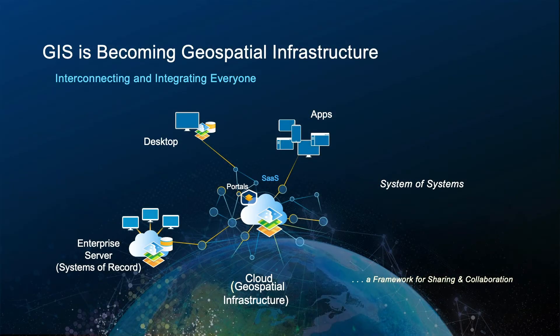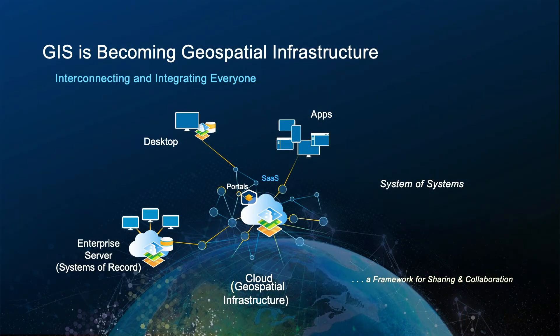This is a bit technical for some of you, but GIS is becoming for organizations what I would call infrastructure. It's not only systems of engagement and enterprise servers — those big machines that keep all the data — but it's also used for analytics on desktops. There are millions of people that use desktops to access this data and do analytics. And then it supports this whole world of apps — web apps, field apps, and mobile apps — which engage people and let them understand the system of record and analytics in real time.